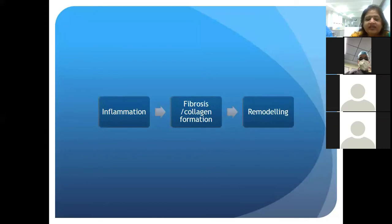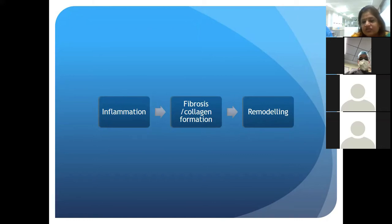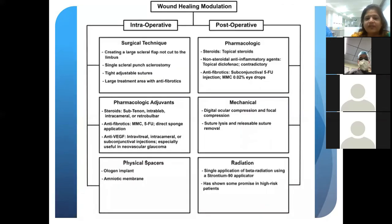We all know that any healing process has three different stages: initial inflammation, fibrosis and collagen formation, and finally remodeling. This slide tells us at what different stages we can implement wound modulation.